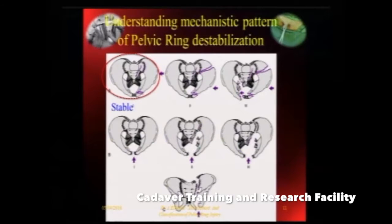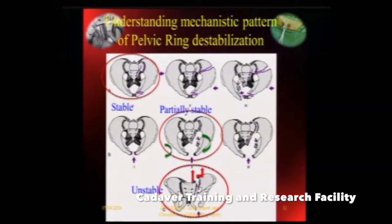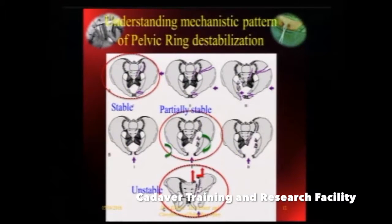What we need to understand is that if the ring is only peripherally disturbed, it is essentially a stable situation and your patient should more or less be hemodynamically stable. If your patient is hemodynamically unstable or is not being stabilized by your ABCDs, your alarm bell should ring — there is something else happening. You need to investigate further and be prompt and proactive, because apparently innocuous-looking injuries might have a very significant associated injury which could be life-threatening. Even today the risk of mortality with hemodynamically unstable pelvic injury patients is up to 20%.